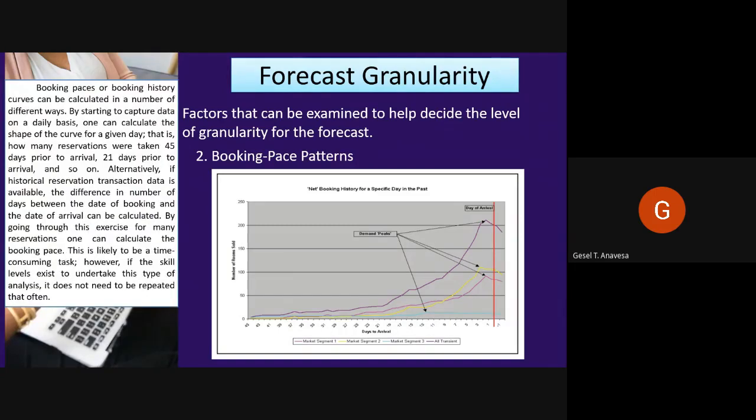Looking at the patterns for one day is not enough to use for future forecasting or to draw any conclusions. If this type of data collection is put into place systematically over time, the revenue management team will be able to consolidate the data to create a picture of the average curve. This information will provide the team with a greater understanding of the way that business actually books, which in turn will help with future forecasting and decision-making.